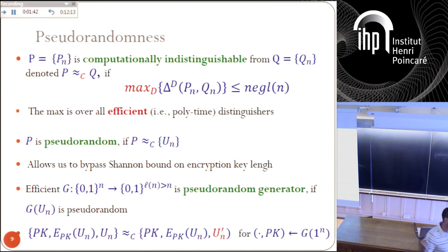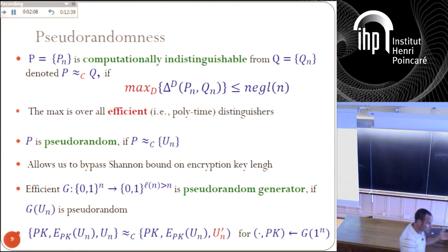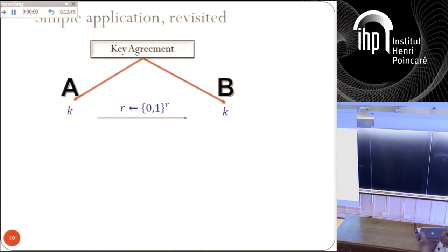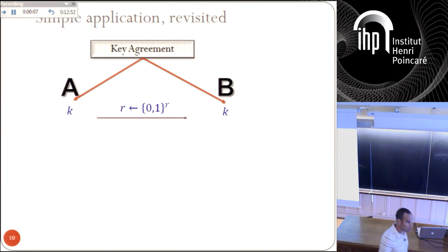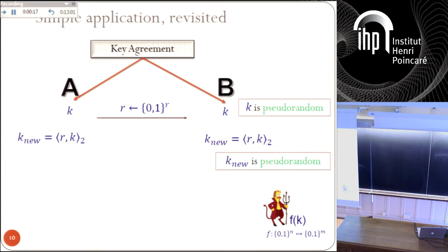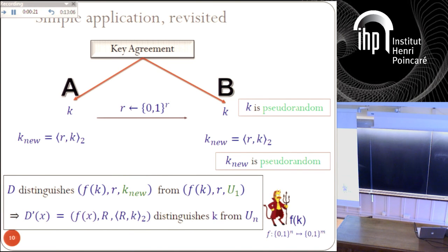Let's go back to our example. If one uses public encryption, the security of public encryption says the following: given the random public key and the encryption of a public string, this is computationally indistinguishable from the public key and an independent n-bit string. Namely, given the encryption scheme and the public key, you cannot tell the encrypted message from truly random bits. Now we can go back to our example. The key is no longer uniform from the adversary's point of view, but it is pseudo-random. And if it is pseudo-random, I claim that the new key is also pseudo-random.